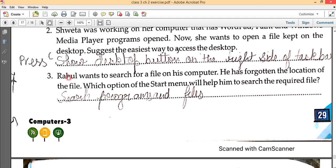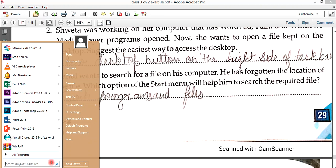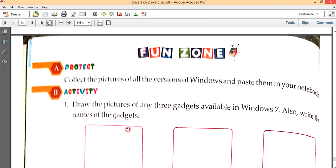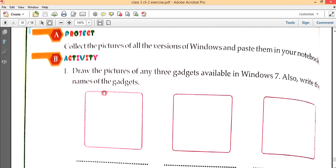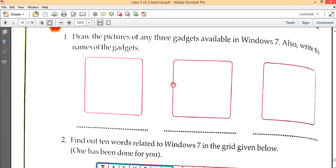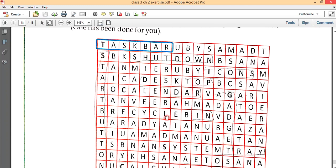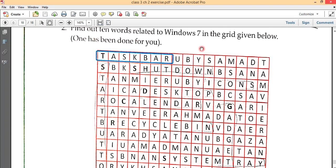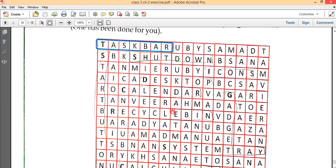Rahul wants to search a file on his computer. He has forgotten the location of the file. Which option of the start menu will help him to search the required file? The answer is search programs and files. You can choose search programs and files.